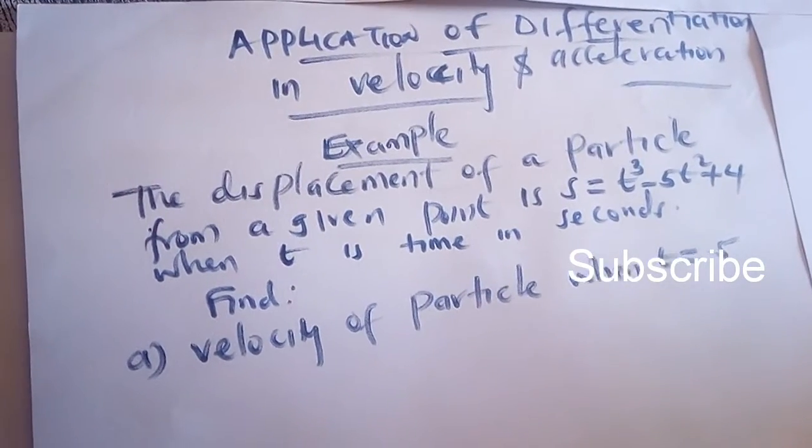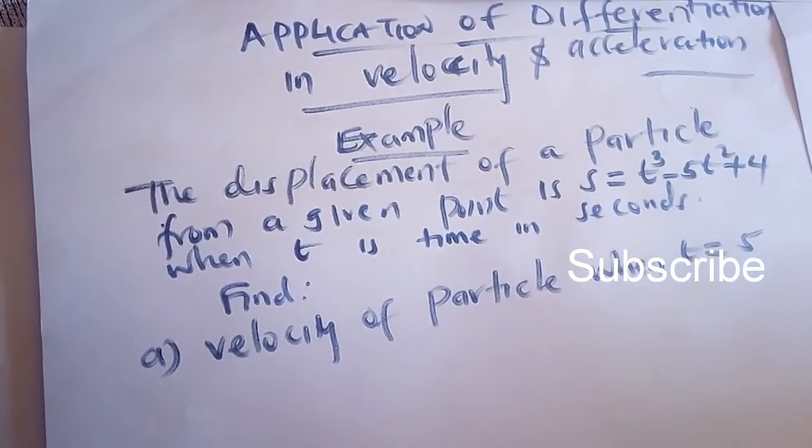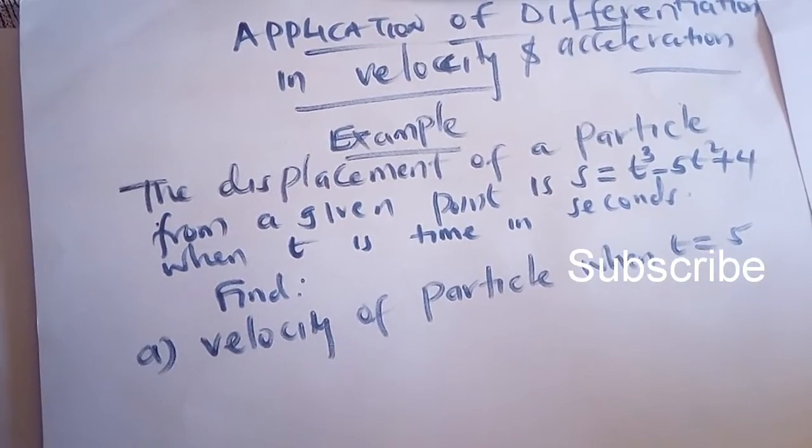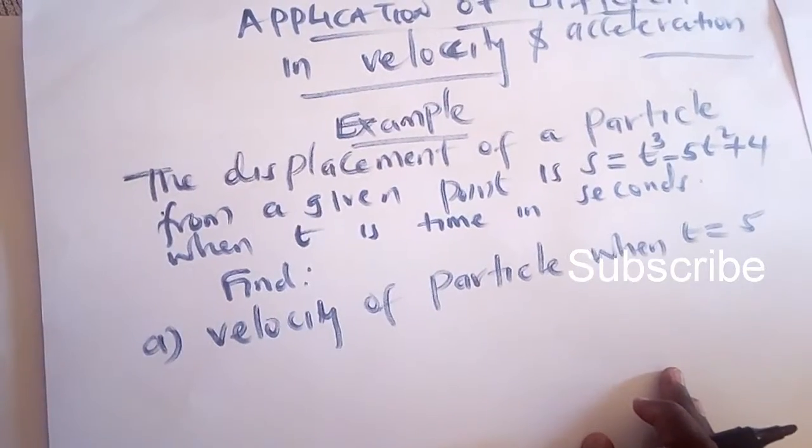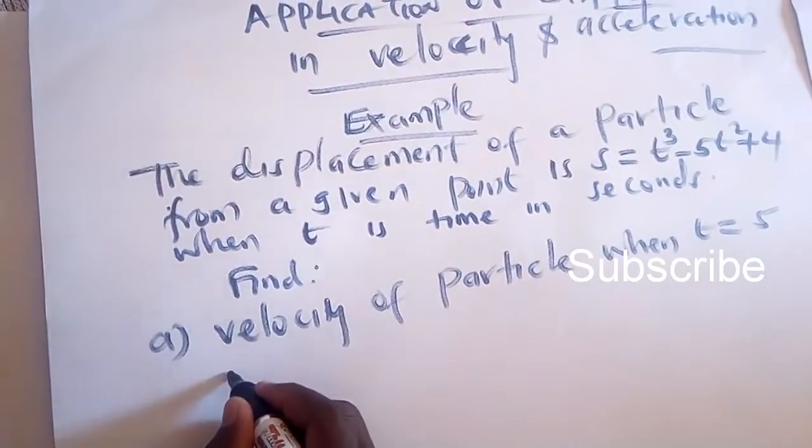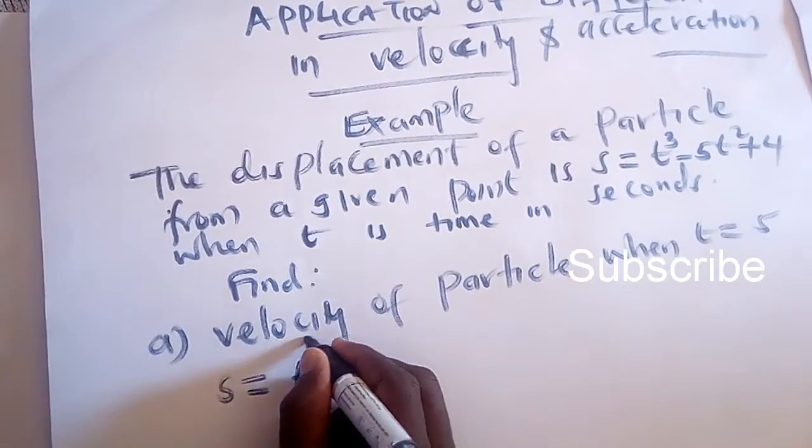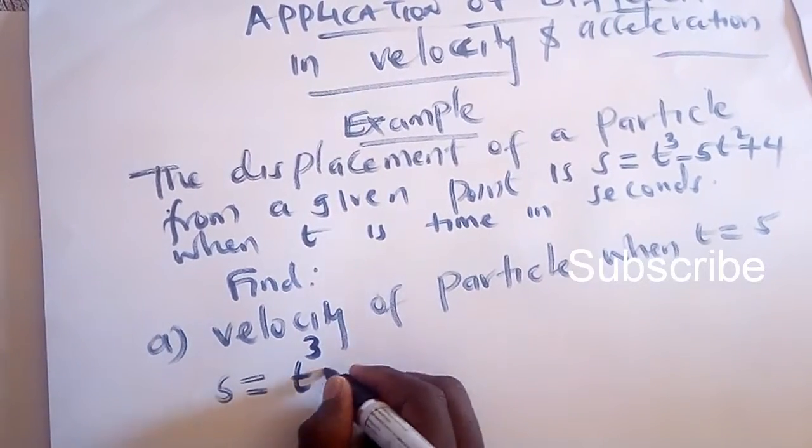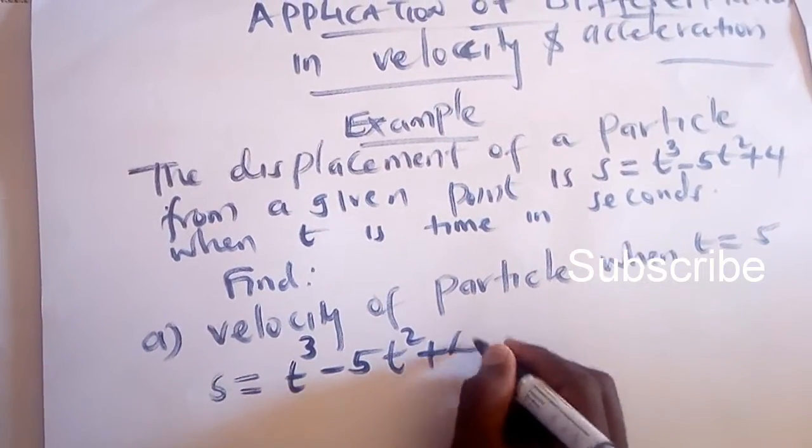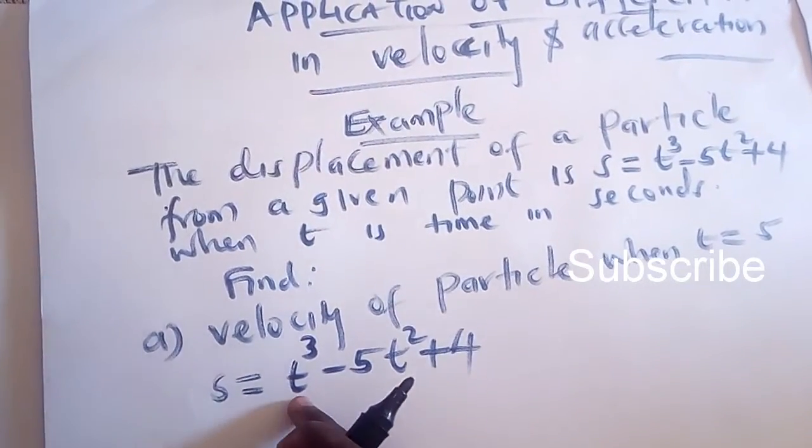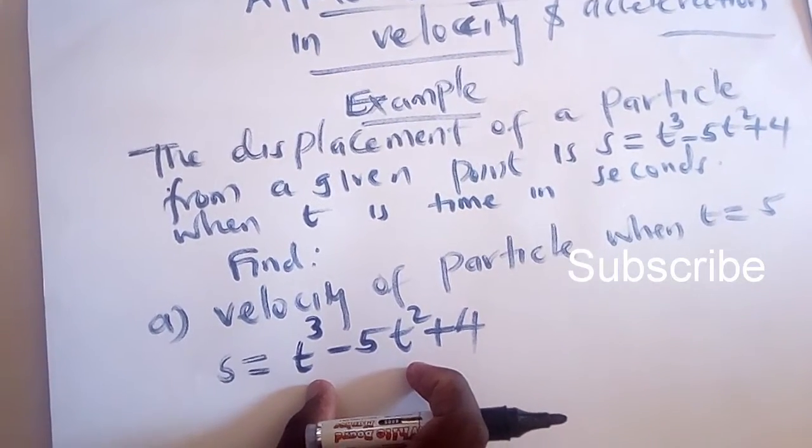In today's video, we'll discuss application of differentiation in velocity and acceleration. We use the concept of differentiation to find velocity and acceleration. The example here: the displacement of a particle is given by s equals t cubed minus 5t squared plus 4, where t is time in seconds.